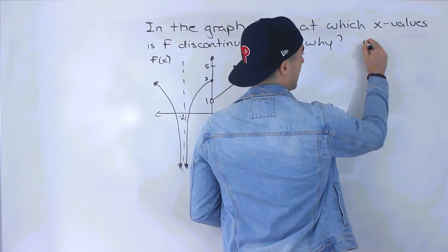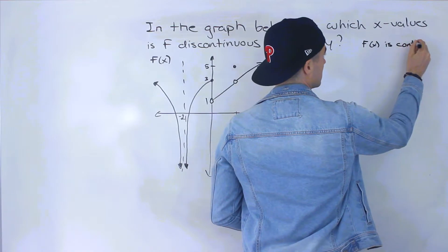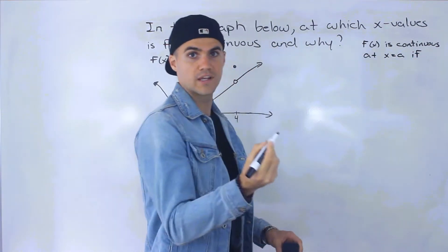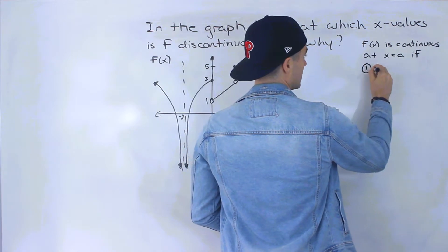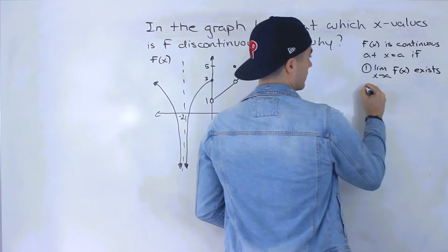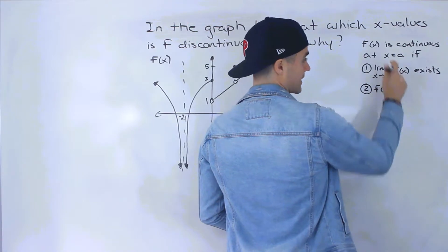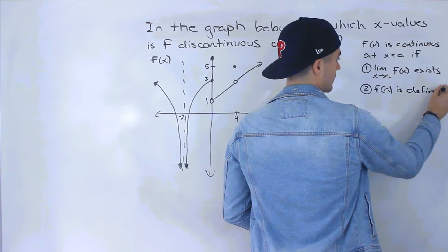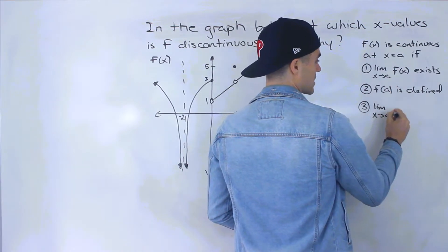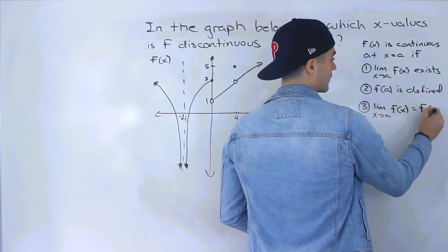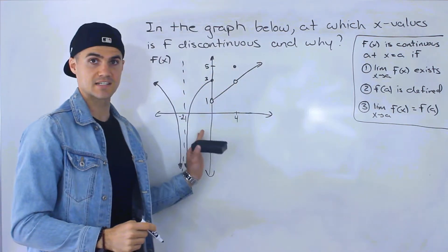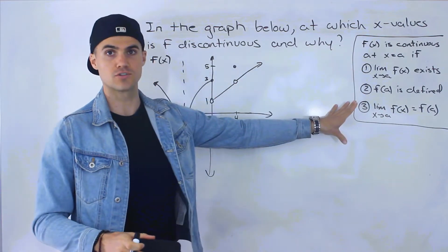f of x is continuous at an x value of a if three conditions are met: number one, the limit as x approaches a of f of x exists; number two, f of a at that x value is defined; and number three — the most important one — the limit as x approaches a of f of x is equal to f of a. When we talk about where this function is discontinuous and why, I'll be referring to that definition.